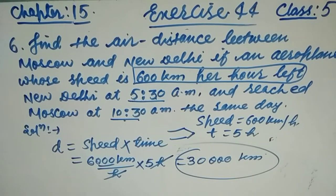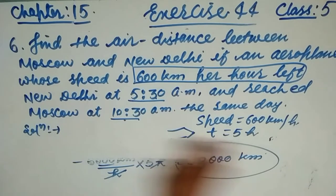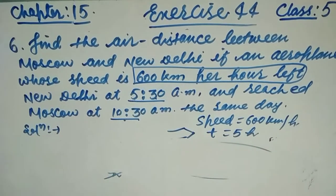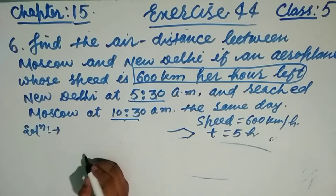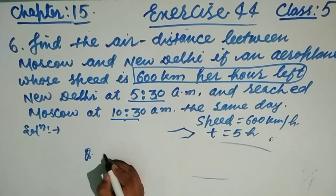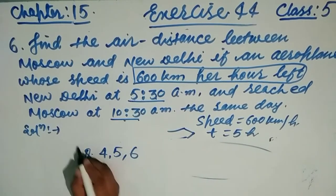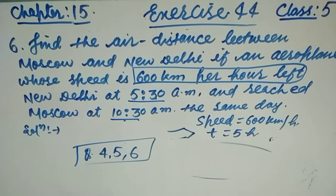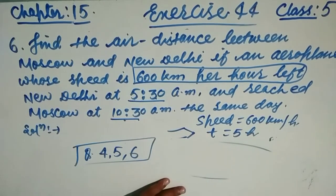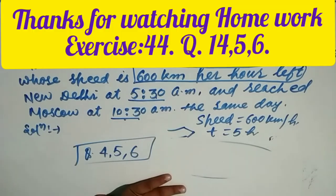Now friends, question number four you can solve yourself. We simply apply the formula: speed equals distance divided by time, and we can easily find the answer. I hope you understand. Your homework is to solve questions four, five, and six and make a fair copy neatly and tidily. If you have any doubt or confusion, ask me in the comment box. Have a nice day!